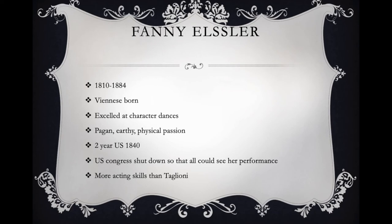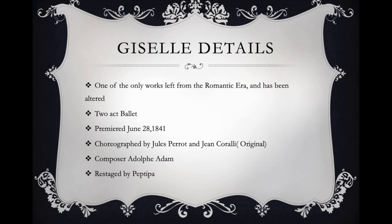When Fanny Elssler came to the U.S., Congress shut down because they wanted to see her dance — she essentially shut down Congress. Giselle is a Romantic Era ballet that you're going to watch. It began as a two-act ballet, first premiered in 1841, choreographed by Perrot and Coralli, composed by Adolphe Adam, and restaged by Petipa.